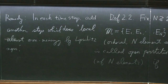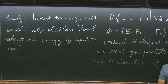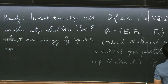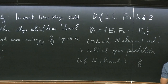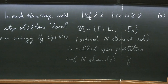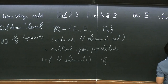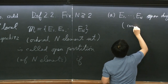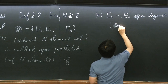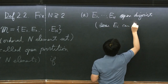If the following is true: first, E_1 through E_N are all open and disjoint. And some of them can be empty — some E_i can be the empty set. That's important to notice; they don't all have to be nonempty.